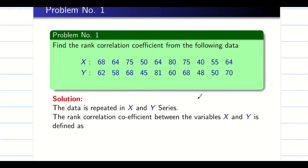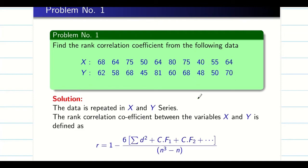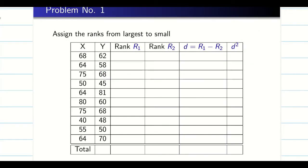Since X and Y have repeated values, we are going to use the rank correlation formula for repeated ranks. We are going to find a correction factor in addition to d² to solve the problem. Now we are going to allocate the ranks for column X and column Y — we should be very careful here.